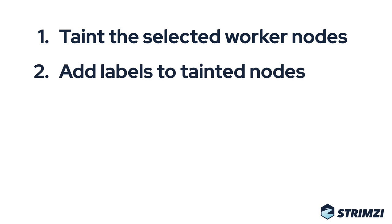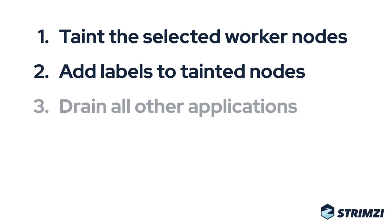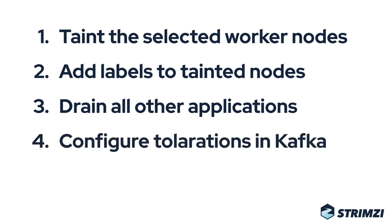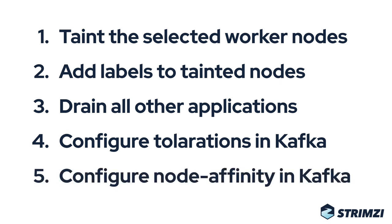With the taints and labels set, we should have the dedicated nodes ready. One thing to keep in mind is that tainting the nodes will not drain them. So if you decide to dedicate some nodes which were already running other apps, you will need to make sure those apps are moved to other nodes. We now need to configure Kafka to use these dedicated nodes — the tolerations for the taint and the node affinity matching the labels — and we will do that in the Strimzi custom resource.